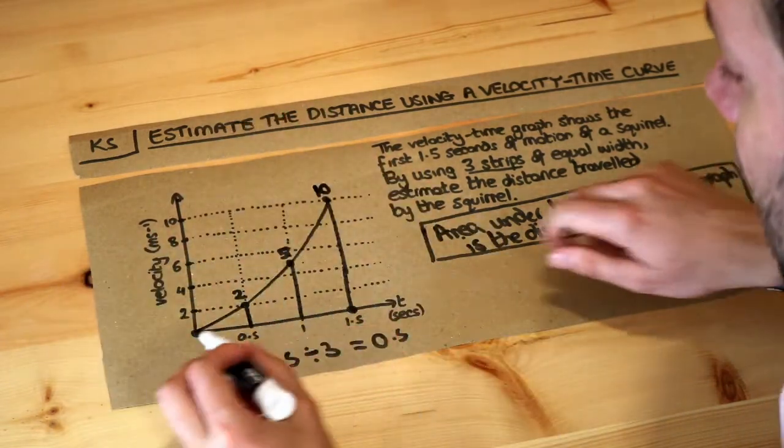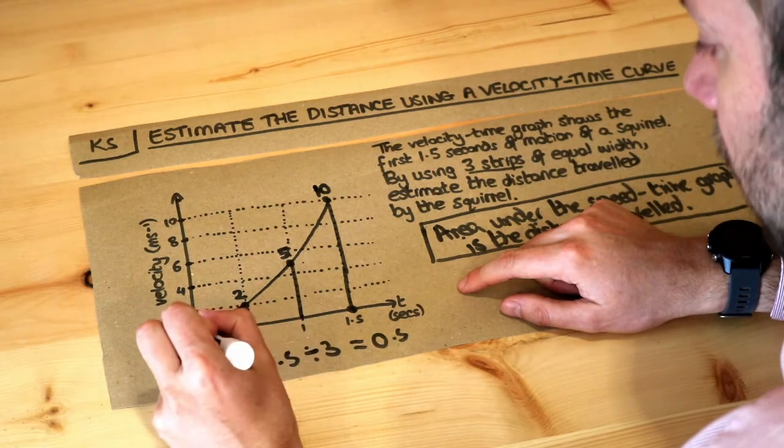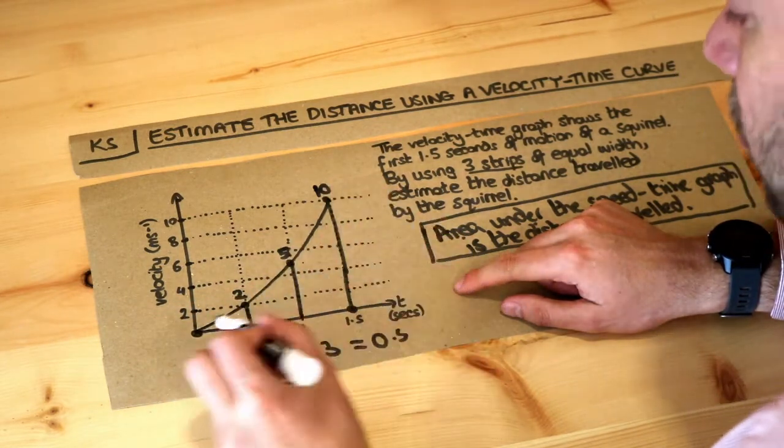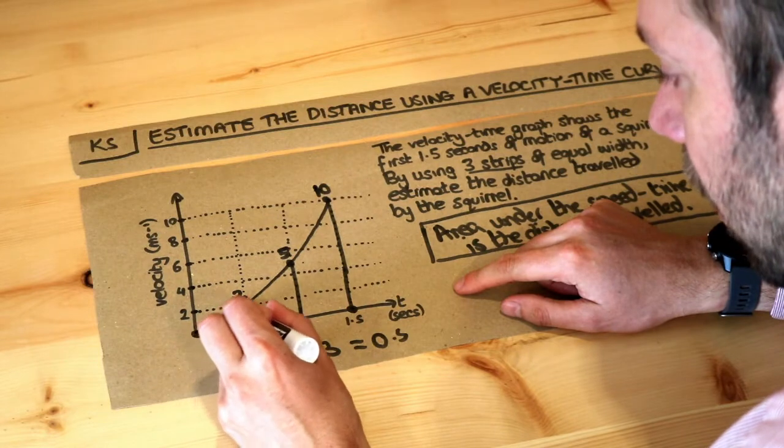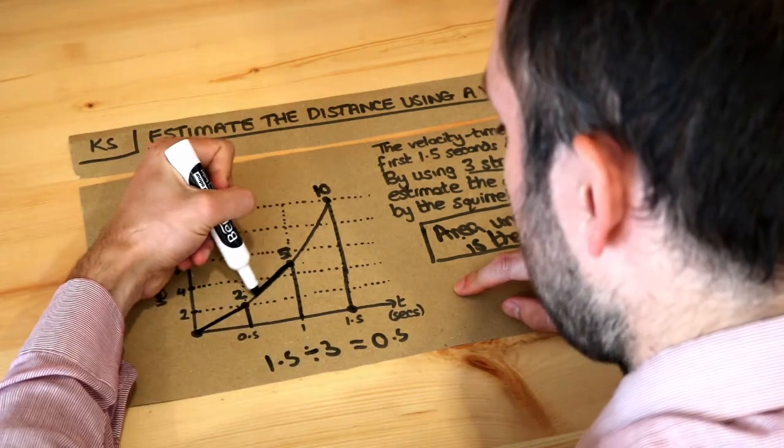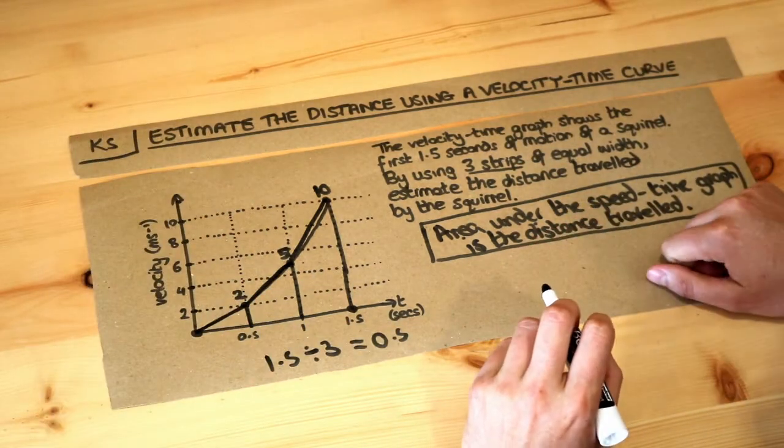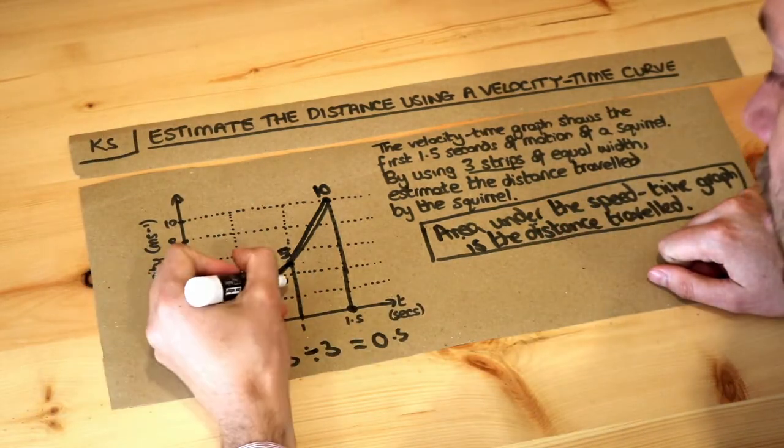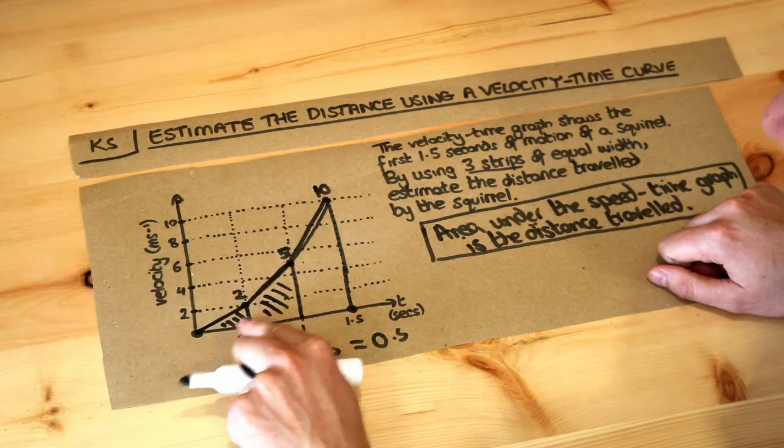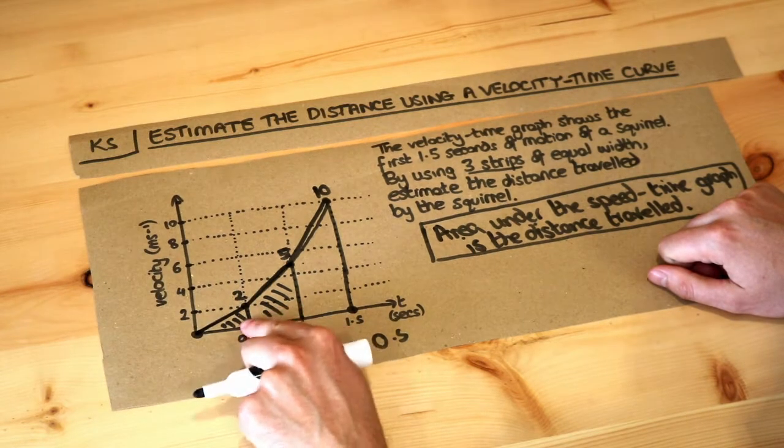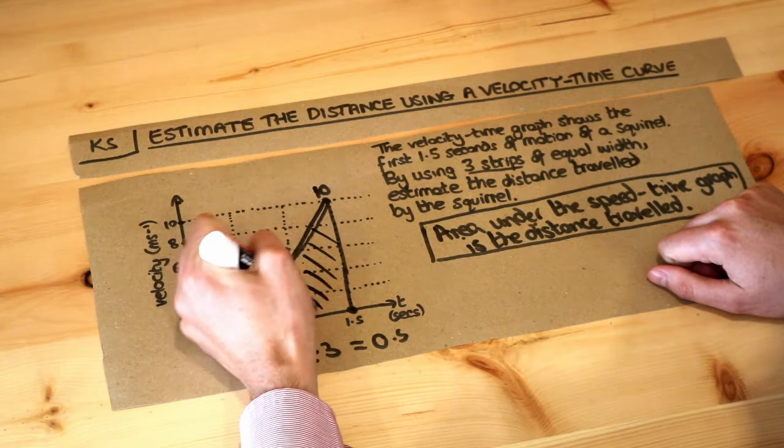Now if we connect these points, including the first one, so we connect these points up with straight lines, so we've got a straight line like this, a straight line like this, and a straight line like this—can you see that now we have nice shapes? We've got a triangle here, this is a trapezium because it's got a pair of parallel sides, and this is also a trapezium.